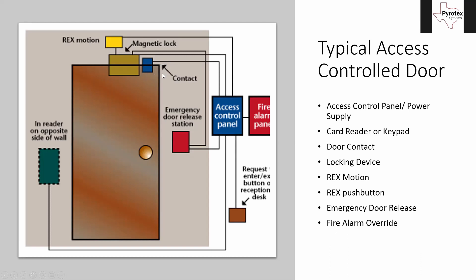Next is a door contact — a status indicator for the access control panel to know the door was opened and closed again. It can also double as a security intrusion sensor. Above the mag lock we have the REX motion sensor — REX means request to exit. This motion sensor is mounted on the ceiling inside the door, pointed down the hallway, so as someone approaches, it de-energizes the magnetic lock and allows the door to move.